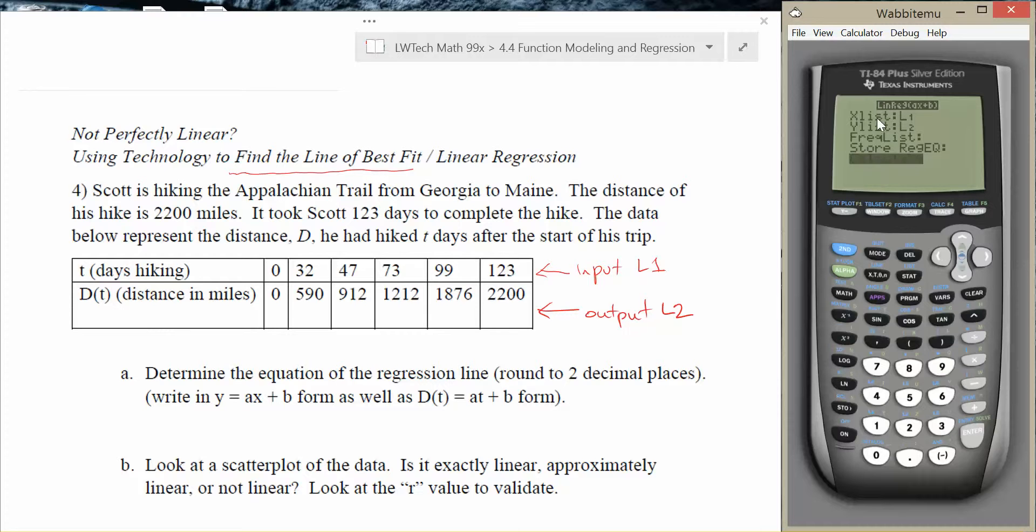On earlier versions of the TI, it's not going to ask you this information. It just assumes that you always put the x in list one and the y in list two. When we hit enter, we're going to see these data values here. Notice I've got the general equation, so it reminds me what my general equation here is, which is y equals ax plus b. Then it tells me the specific numbers for a and b that I want to put into the equation to make my line a best fit.